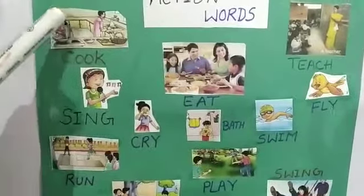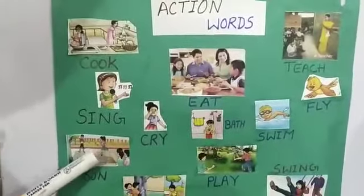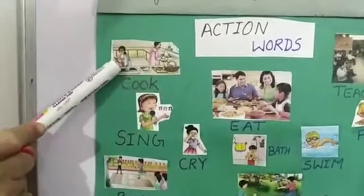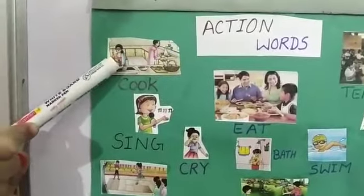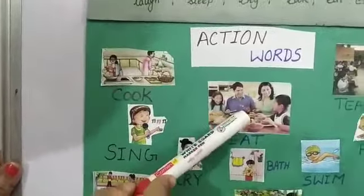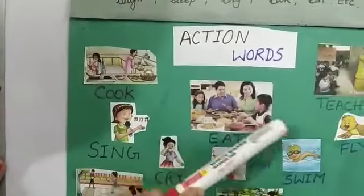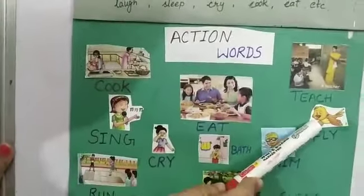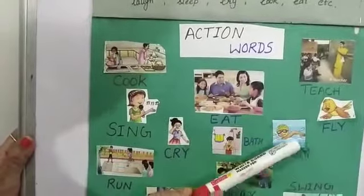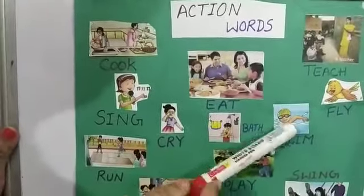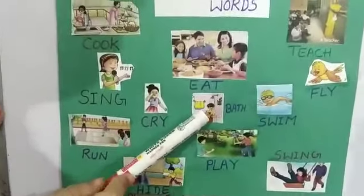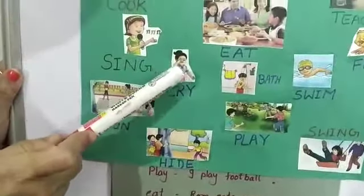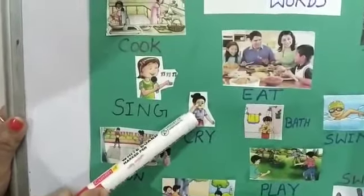I am showing you some pictures of action words. Mother is cooking. Family is eating. Teacher is teaching. Bird is flying. Boy is swimming. Boy is bathing. Girl is crying.